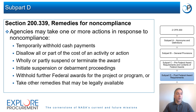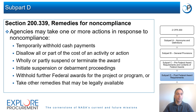If an award recipient fails to comply with federal statutes, regulations, or the terms and conditions of an award, agencies may impose additional terms and conditions or take corrective actions. Per Section 200.339, NASA's remedies for noncompliance include temporarily withholding cash payments, disallowing all or part of the cost of an activity, wholly or partly suspending or terminating an award, initiating suspension or debarment proceedings, withholding federal awards for the project or program, or taking other remedies that may be legally available.